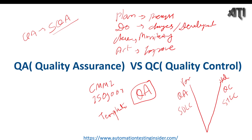In CMMI, there are five stages: Initial, Repeatable, Defined, Managed, and Optimizing. Those are the five different stages of CMMI levels.